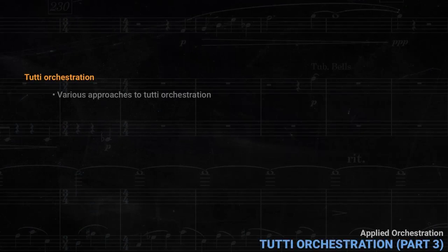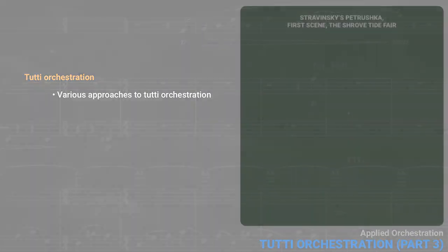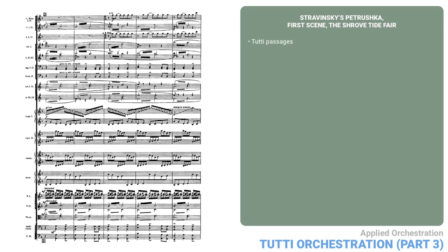In our last two lessons we've been looking at various approaches to tutti orchestration. In this lesson I want to look at a couple of tutti passages from Stravinsky's Petrushka. The first one comes from the first scene, the Shrovetide Fair. This is a different kind of thinking for full orchestra. You may notice a few small differences between the score and the audio. Stravinsky modified his orchestration in 1947, and the score you see here is the original 1911 version. Many examples of the earlier version exist on YouTube. Let's listen.